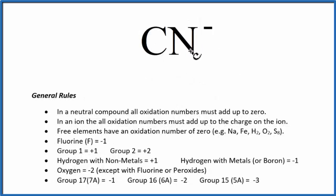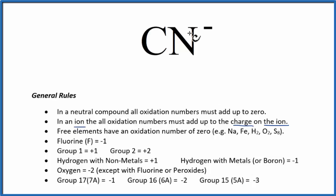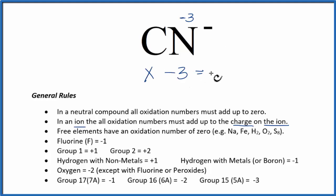For CN⁻, the cyanide ion, we have a negative charge, so all the oxidation numbers are going to equal this negative one. Looking down the list, we don't see carbon, but we do see group 15 or 5A, where nitrogen sits, giving nitrogen an oxidation number of minus three. Setting up the equation: x for carbon minus three equals the charge on the ion minus one, and x equals positive two. So the oxidation number for carbon is plus two.